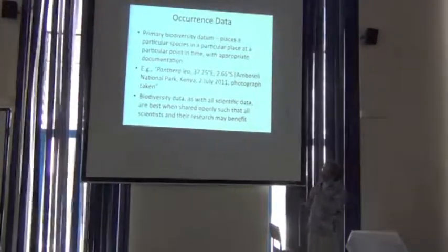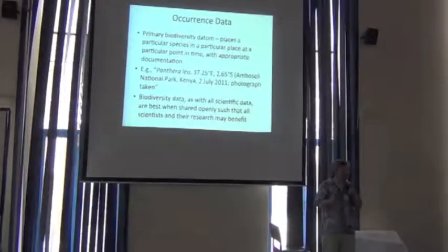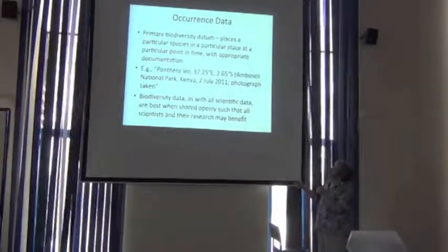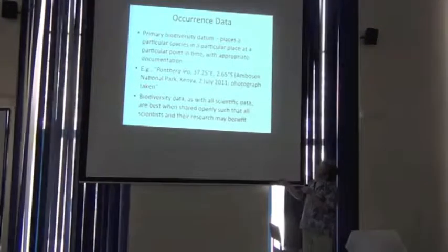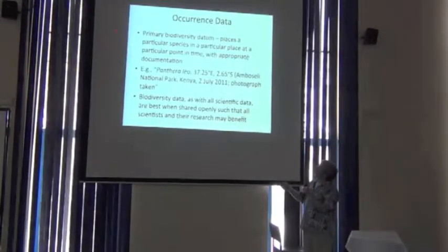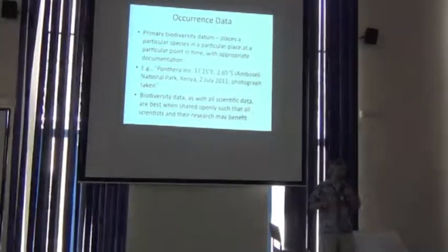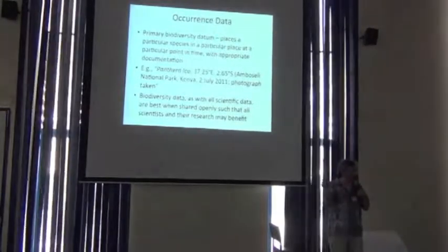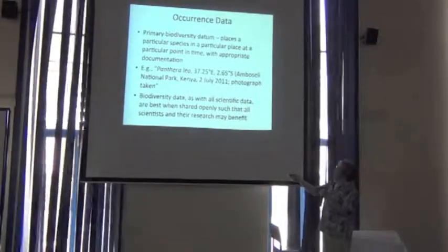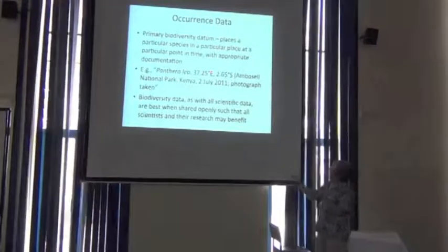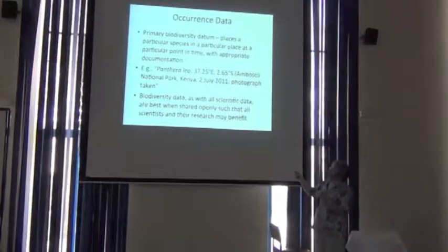So occurrence data are essentially those recorded instances where a species was at a particular place. We can define a primary biodiversity datum as a data record that places a particular species at a particular place at a particular point of time, obviously with documentation. But really what we need is species, place, time. So an example might be something like the record of an African lion at those coordinates on that day, and the documentation is the photograph.